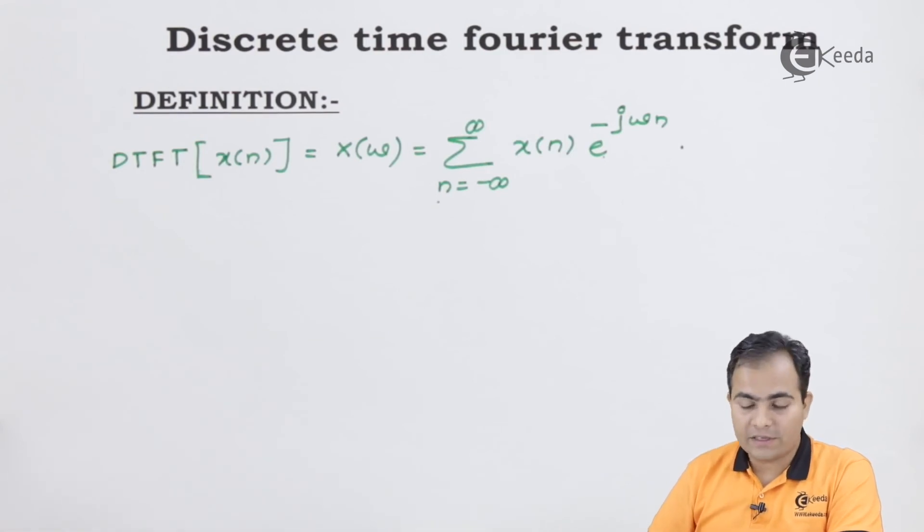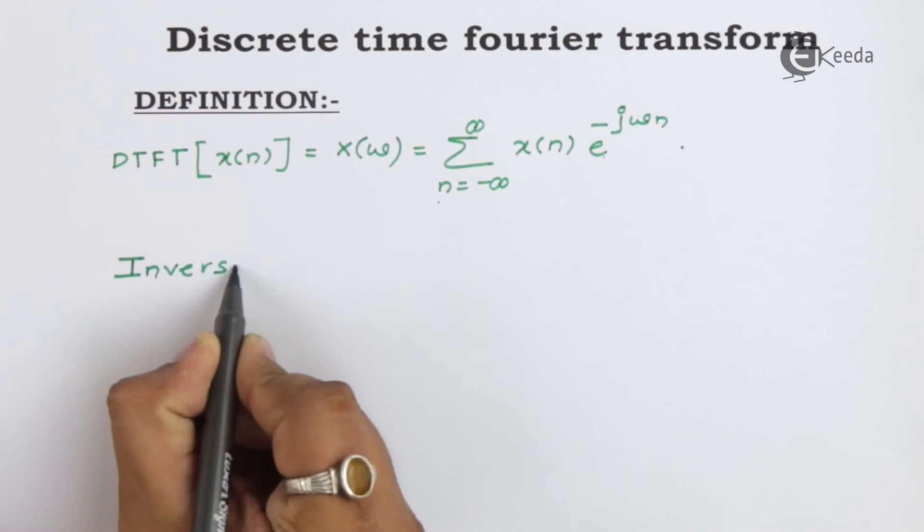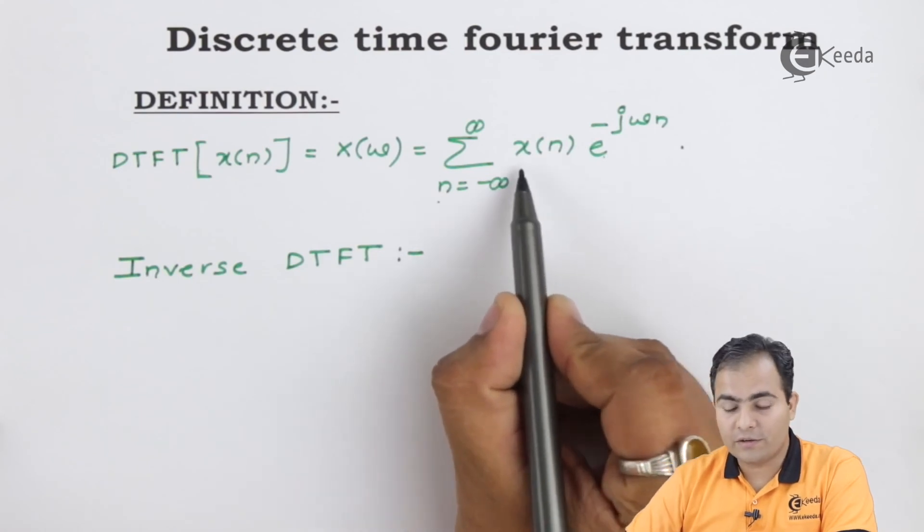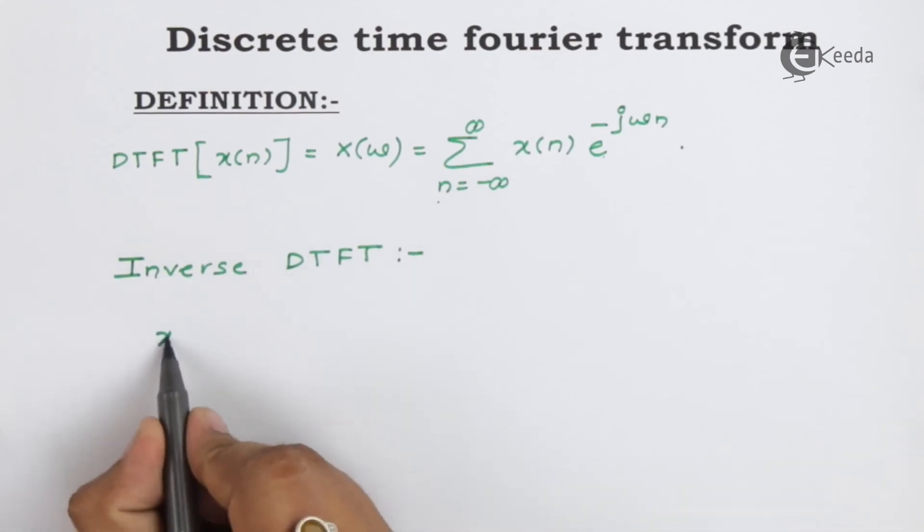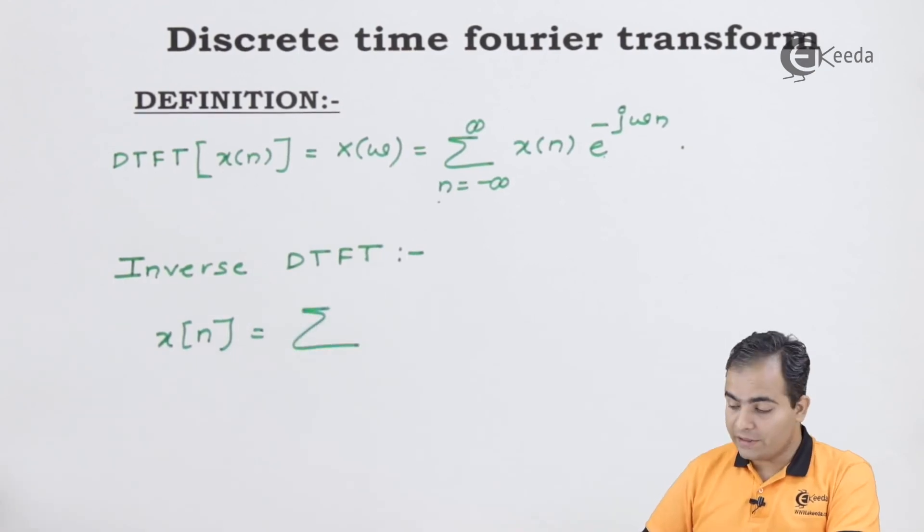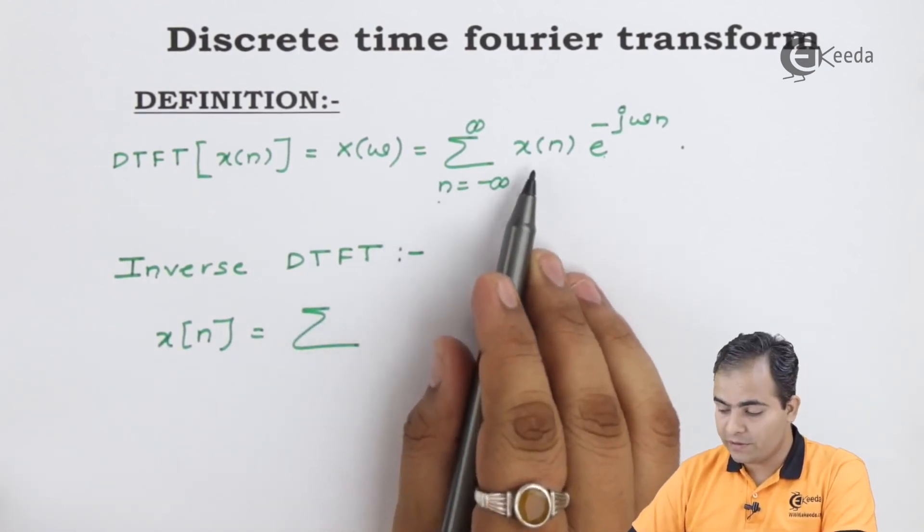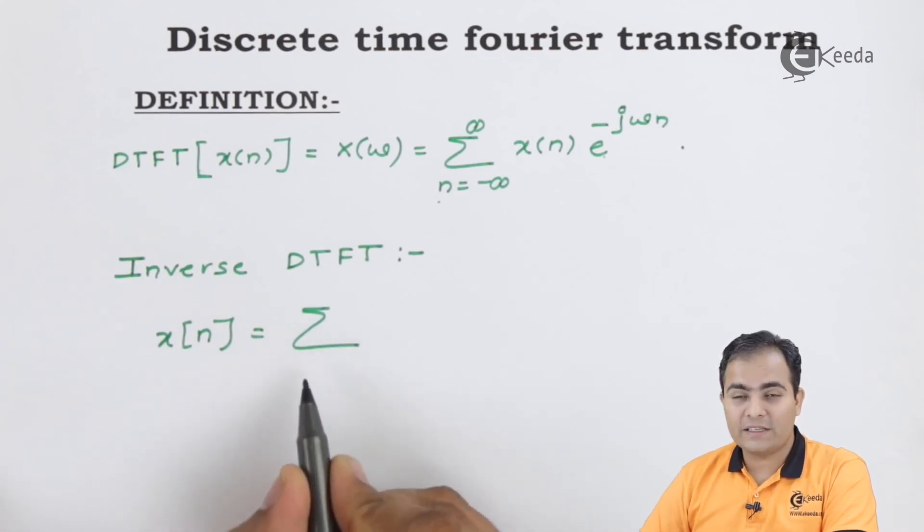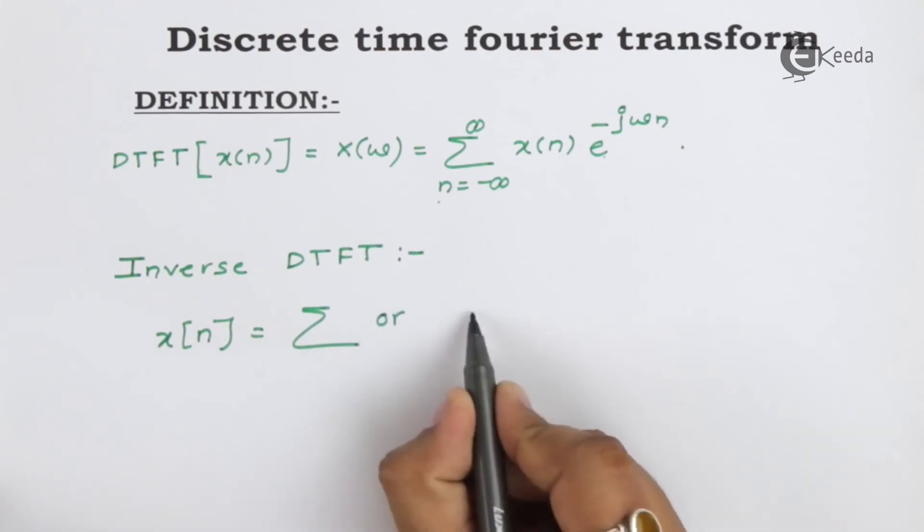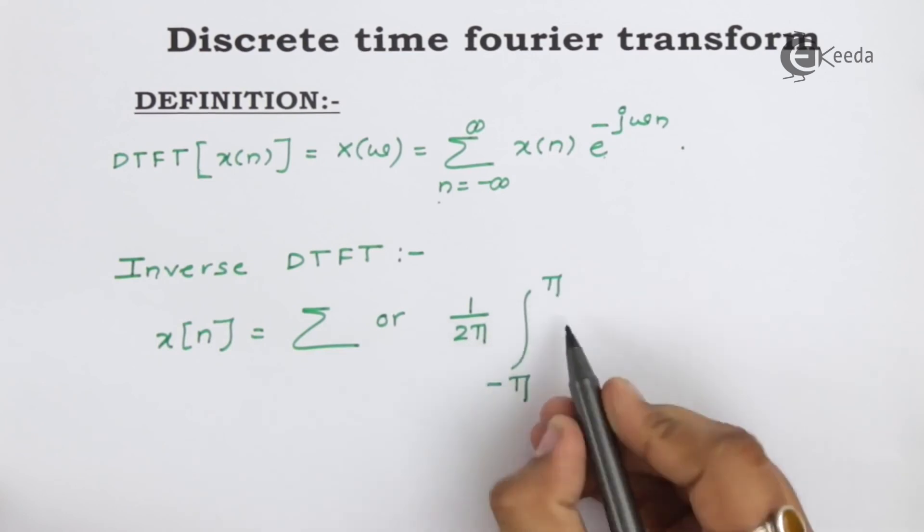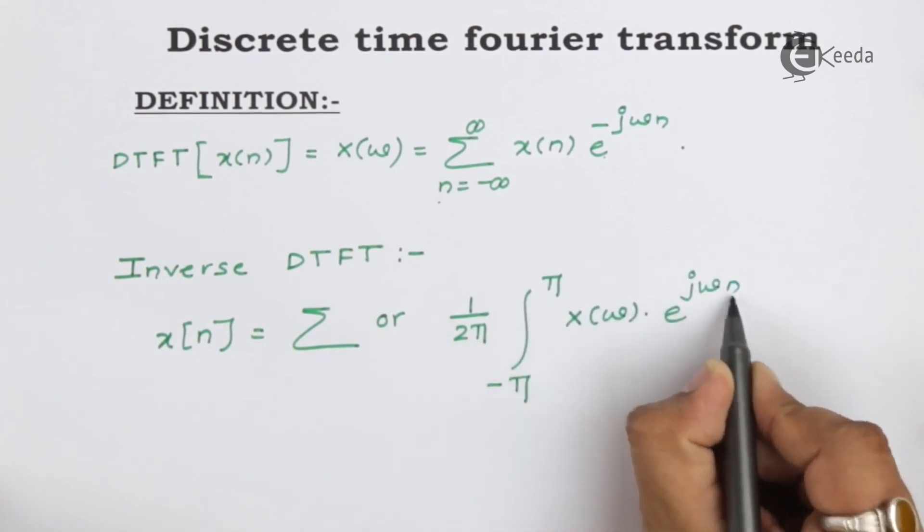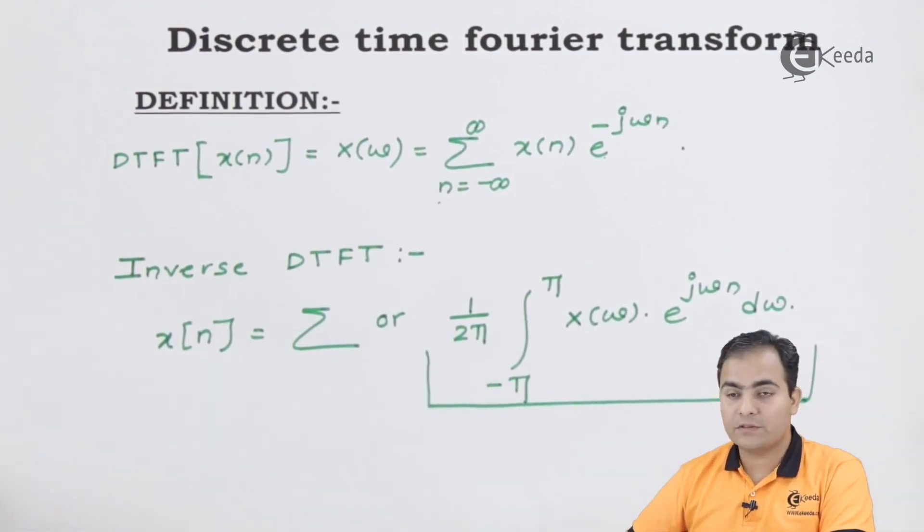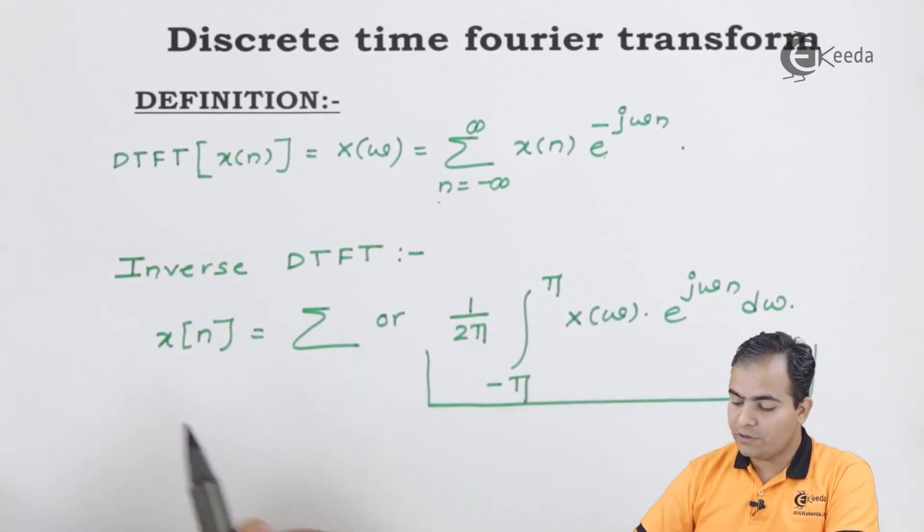Now we will study the inverse DTFT formula. Inverse DTFT means we can regenerate or reconstruct our original sequence x of n. We use the formula with integration from minus pi to pi or summation to convert a frequency domain signal into the discrete domain.